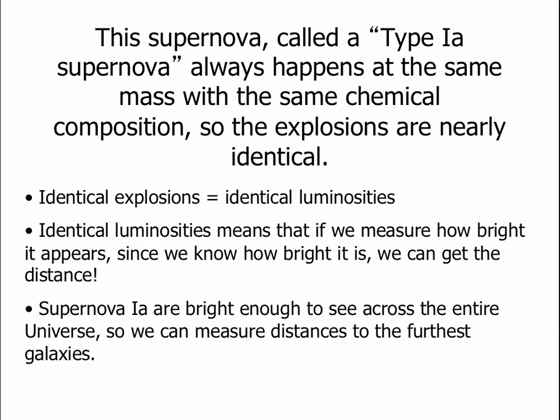And supernova type 1a's are among the brightest supernovae. They're nearly as bright as an entire galaxy. And that's bright enough that we can see them all the way across the universe. So we can use type 1a supernovae to measure the distances to the most distant galaxies that the Hubble Space Telescope can see. Since we can measure distances now to furthest galaxies, we can use type 1a supernovae to help us understand the history of the expanding universe.